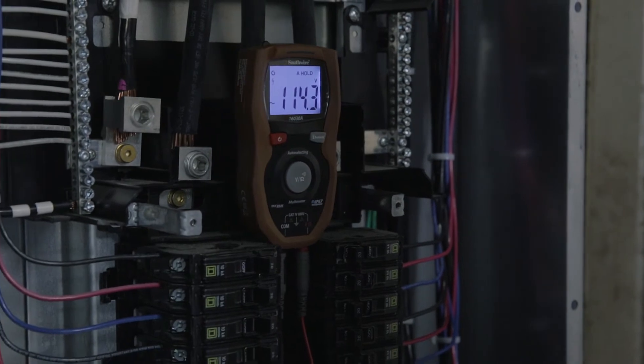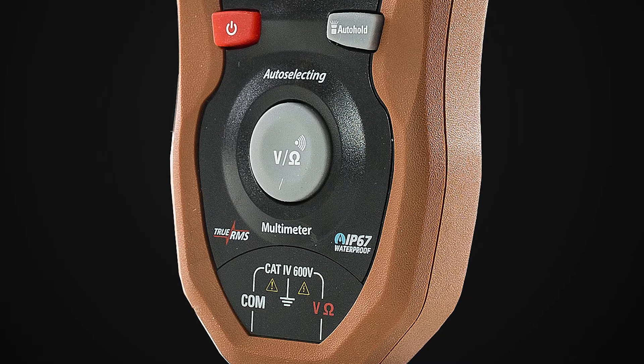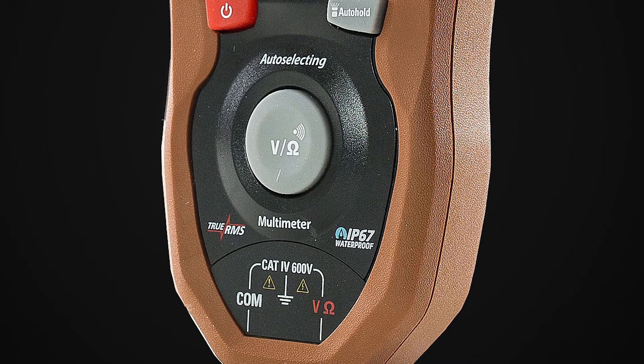Use the auto hold function for quick touch and hold readings. The meter freezes the reading as soon as a stable measurement is detected. True RMS readings ensure accurate results.